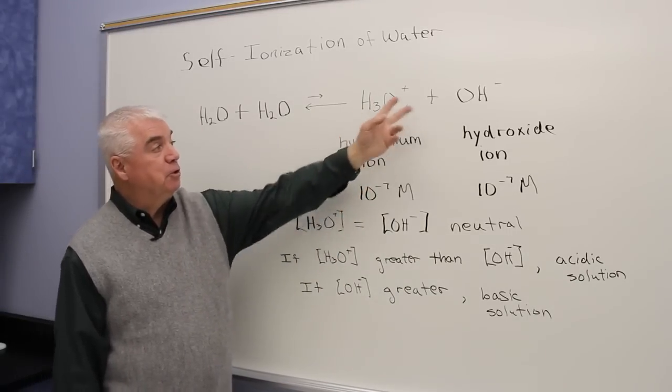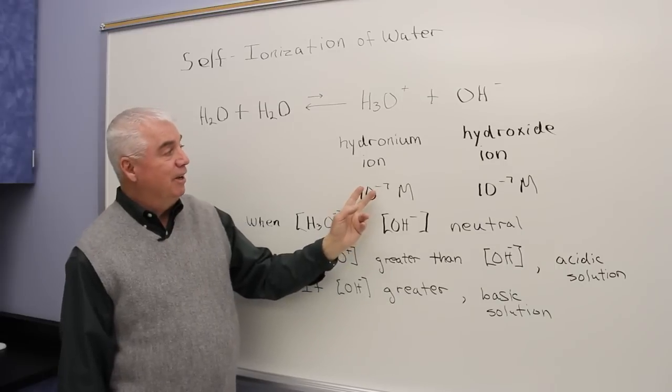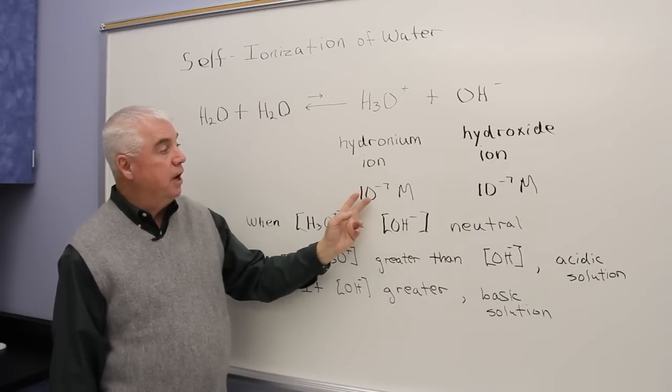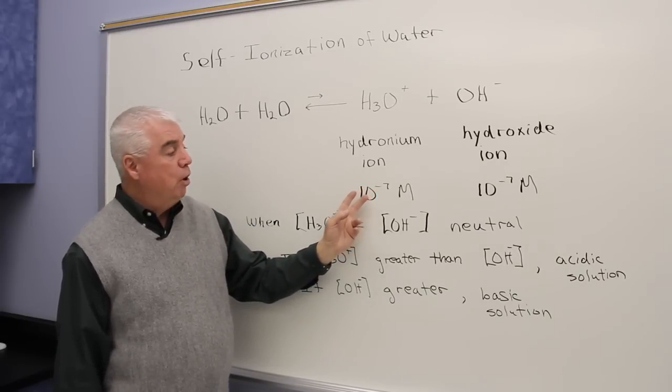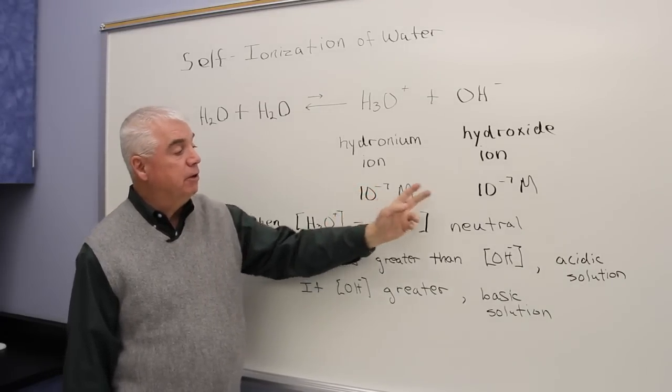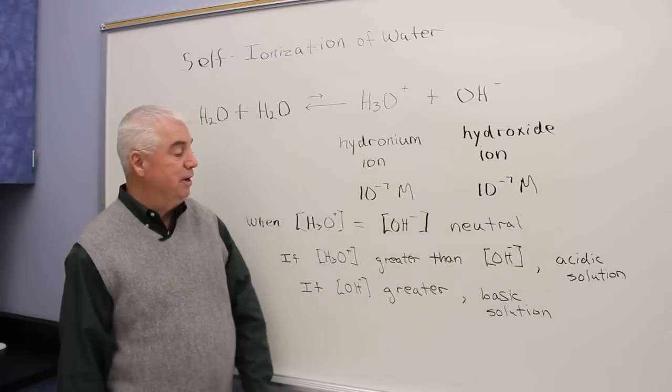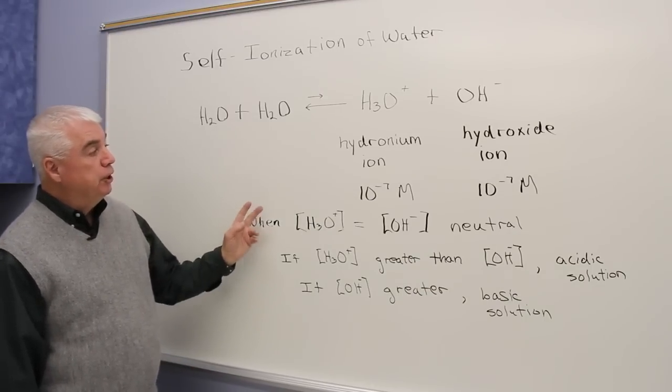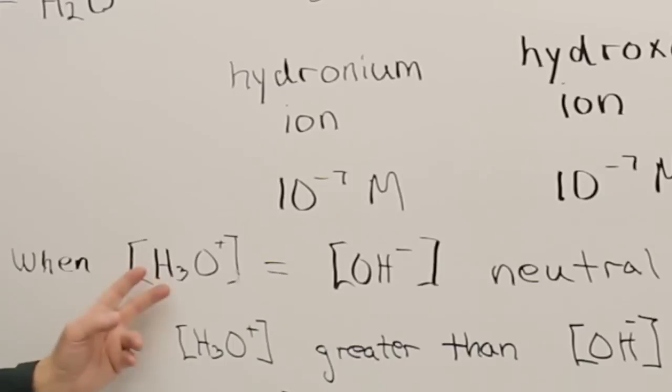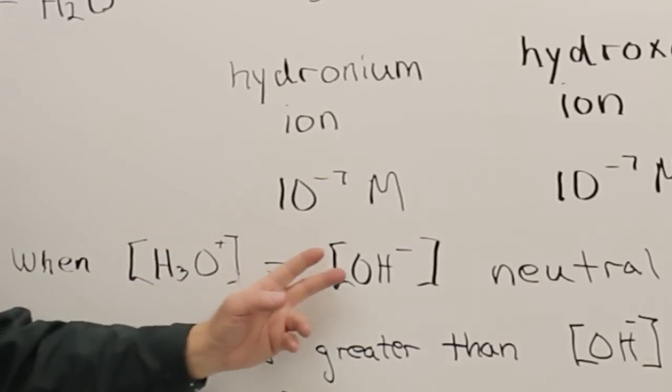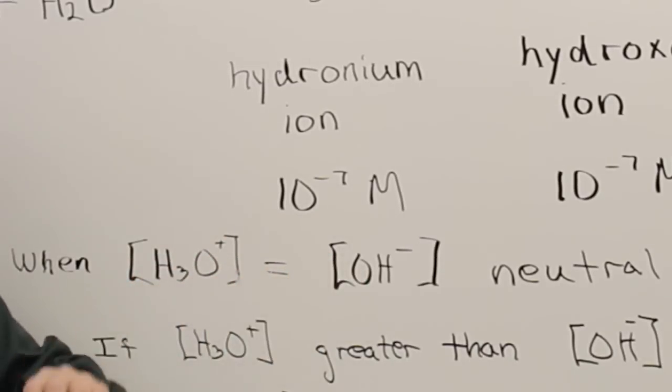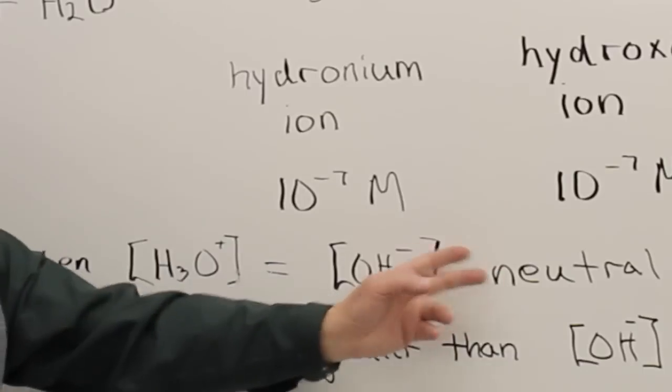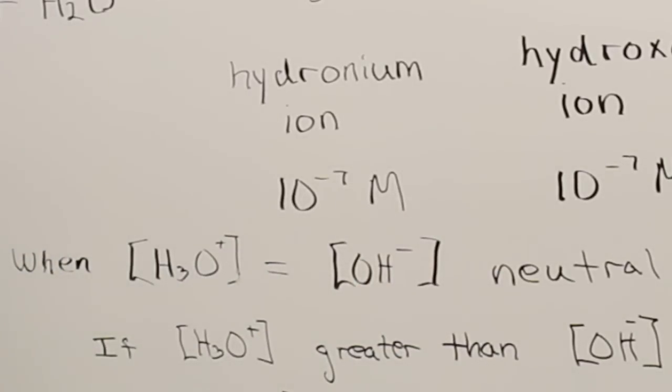As I mentioned, the concentration is pretty low of these species on the right-hand side. If it's pure water, 10 to the minus 7th molar and 10 to the minus 7th molar. And when we have a condition as I've just outlined, when H3O+ concentration is equal to OH- concentration, it's said to be a neutral condition.